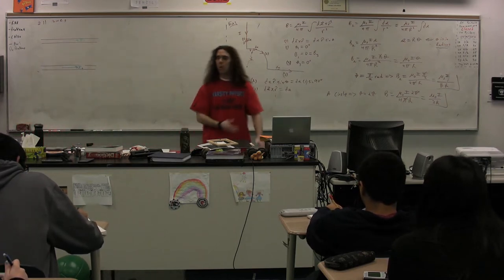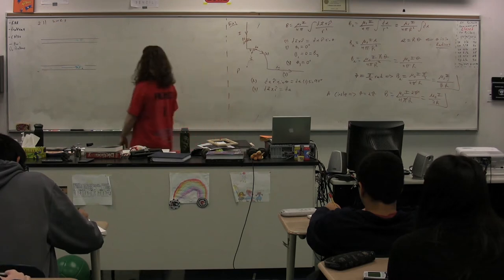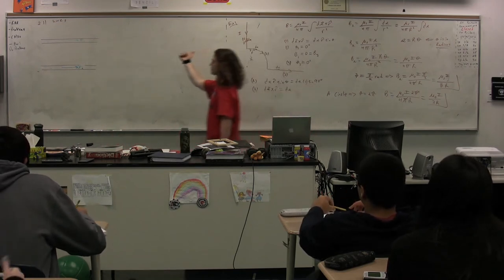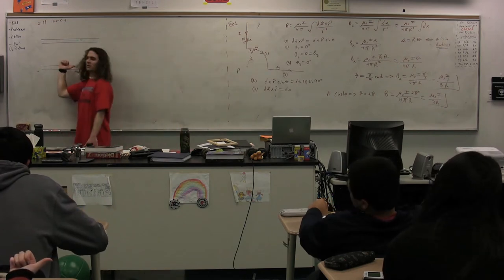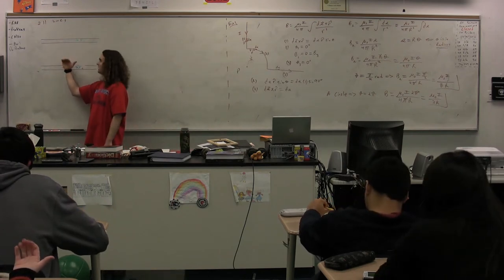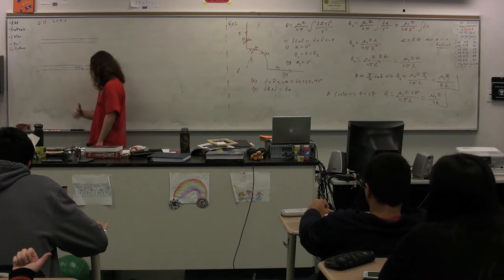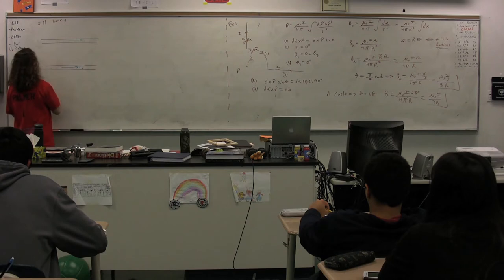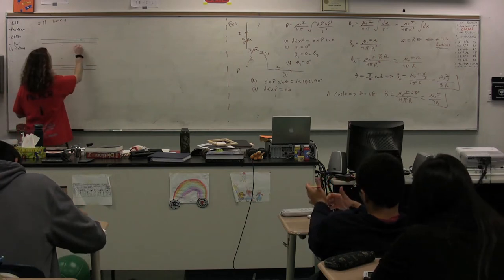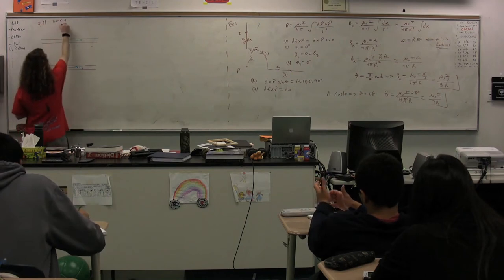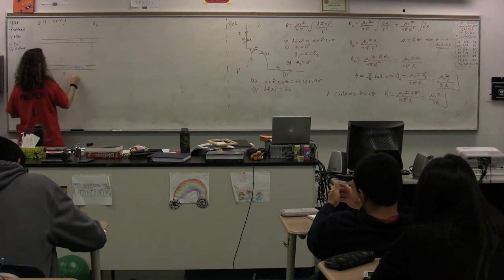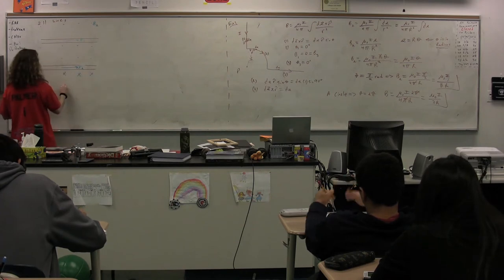Now, notice wire two creates a magnetic field. We take our thumb and point it in the direction of the current on wire two. We get our fingers curling this way. In other words, for wire two, the magnetic field above wire two is out of the board, and below wire two the field is into the board.